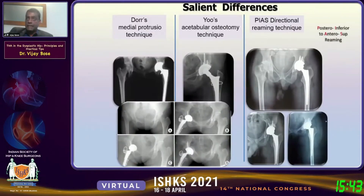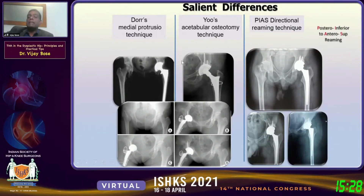Alternatives described by Dhar and others involve medial reaming through protrusio to seat the cup medially. We do not advocate that because it compromises medial bone, which can cause problems as shown in the illustrated case. We always preserve medial bone — very important. We maintain a high hip center and never oversize the socket beyond that of the contralateral normal side.